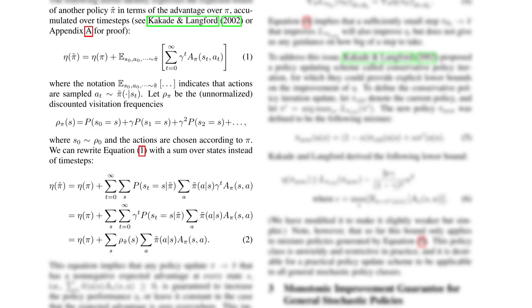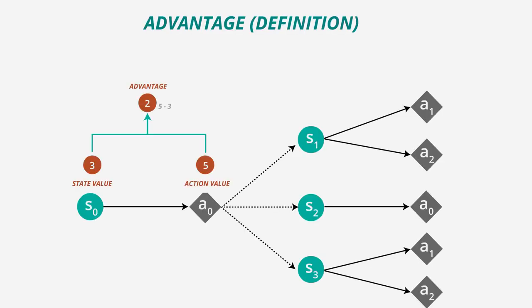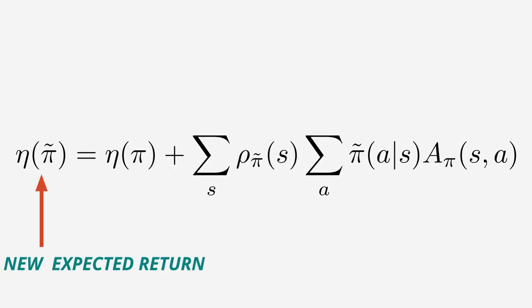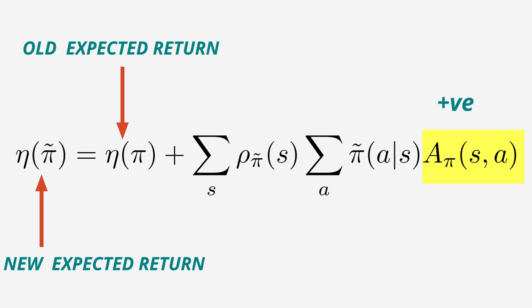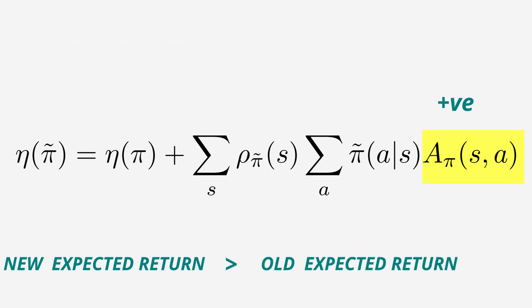After a lot of simplifications provided by Kakade and Langford in 2002, we realized that this term can be rewritten as shown in the video. The advantage term is just the difference between the expected return for an action and the expected return for a state. The takeaway is that the new expected return is nothing but the old expected return plus the expected cumulative sum of discounted advantage. So if the advantages are always positive, then we will always have a policy improvement.